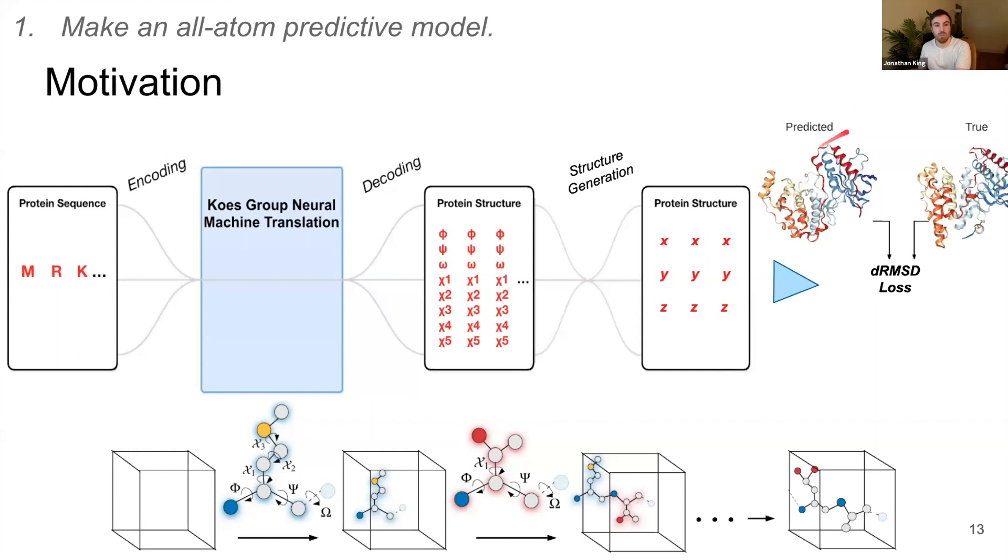In order to train the model, we compare this prediction with the true protein structure, and we use a loss function, which I'll talk about a little bit more later, in order to improve the model's predictions over time. The great thing about deep learning is that all of these operations, even the ones that take the angles and turn them into coordinates, all of these operations are completely differentiable. So we can use machine learning to optimize this whole prediction setup.